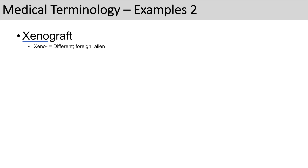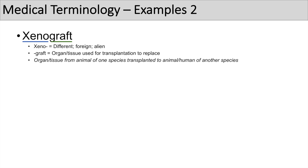The next practice problem is xenograft. Breaking it down: 'xeno' means different, foreign, or alien, and 'graft' means an organ or tissue used for transplantation to replace something. So a xenograft is an organ or tissue from an animal of one species transplanted to an animal or human of another species. For instance, taking an organ or tissue from a pig and using it in a human — that's a xenograft.